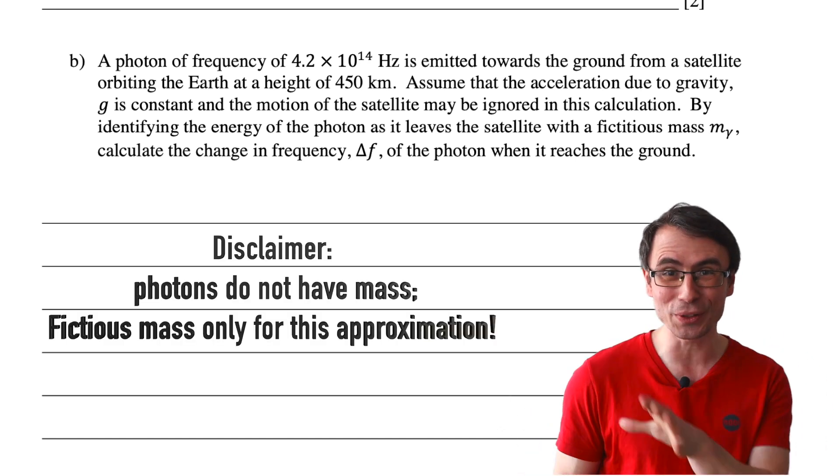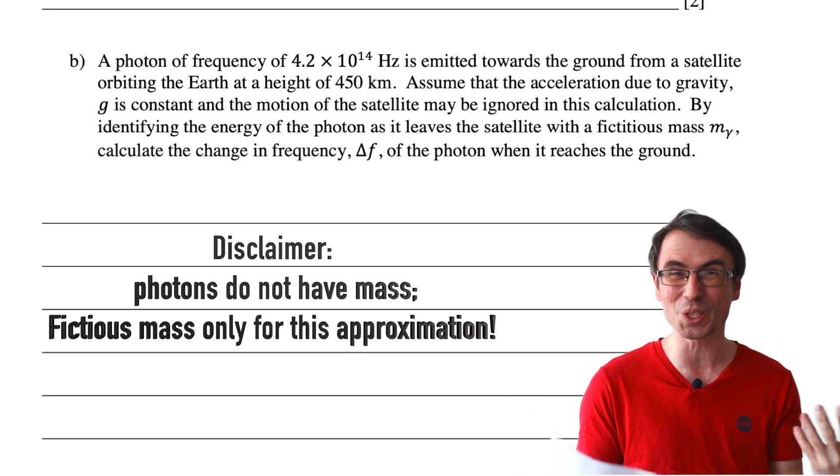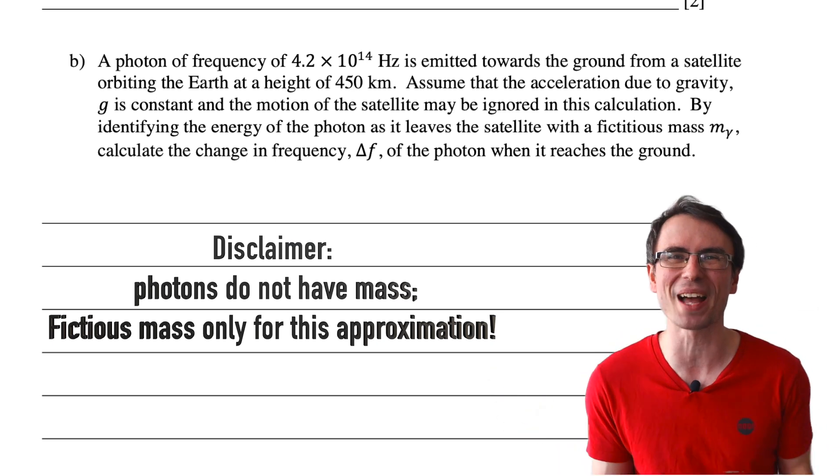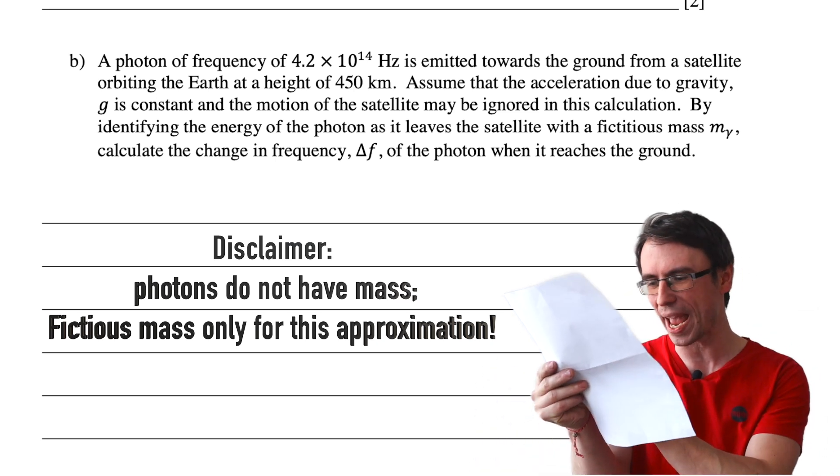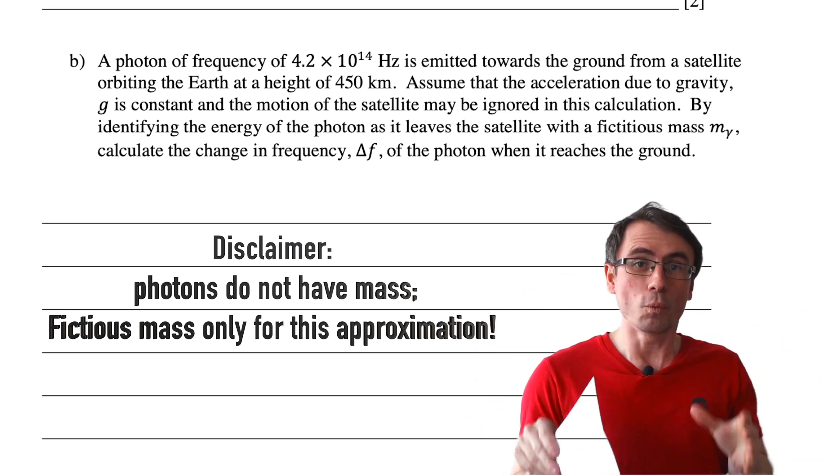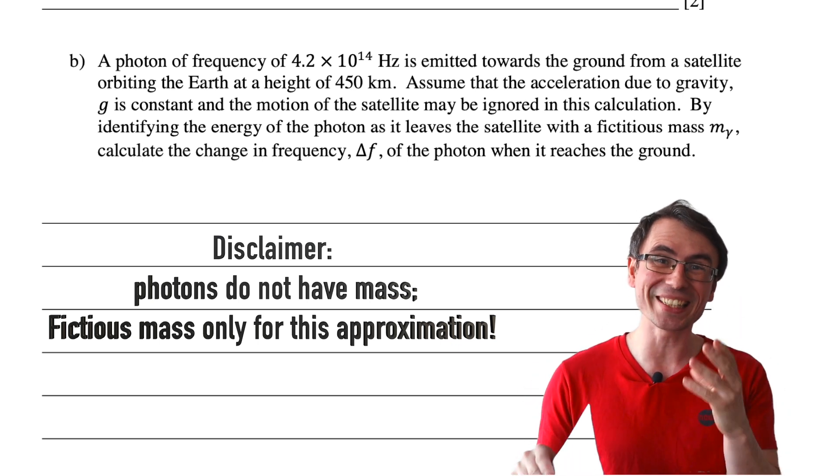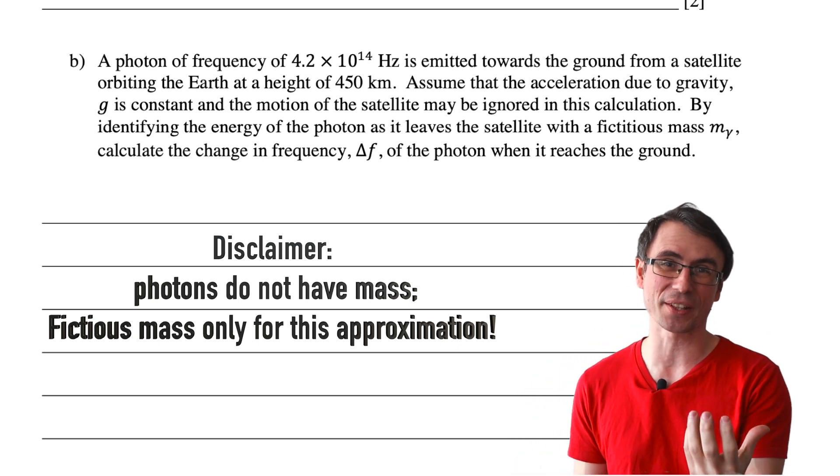You can get this result just by assuming that the photon has some fictitious mass that they've just called mγ in the question. What we want to do is find the change of frequency of that photon.